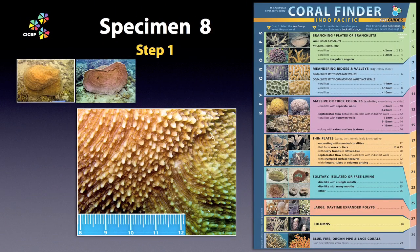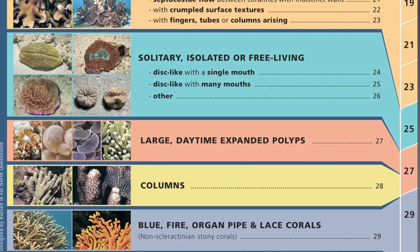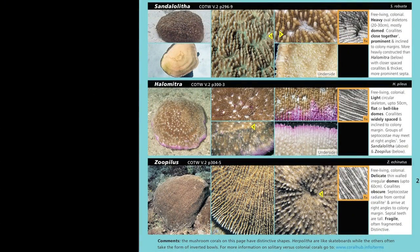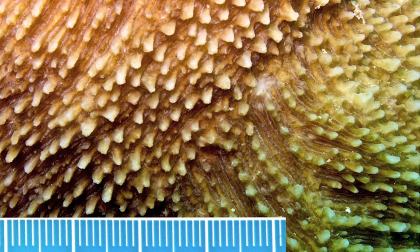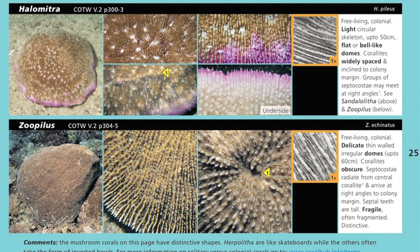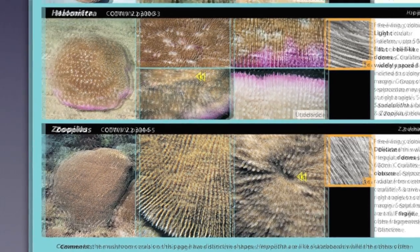Specimen 8. Here is an interesting coral — see how it is domed and unattached, clearly belonging to the solitary, isolated, or free-living key group. Just open up at lookalike pages 24 and 25. A quick scan of the bottom half of page 25 shows domed discs with Sandalolitha, Halomitra, and Zoopilus competing for attention. The lack of easy-to-see coralite centres and the presence of tall septal teeth, combined with the lightly built skeleton, identify the genus as Zoopilus. Halomitra and Zoopilus are interesting in that fragmentation seems to play a part in their life history.